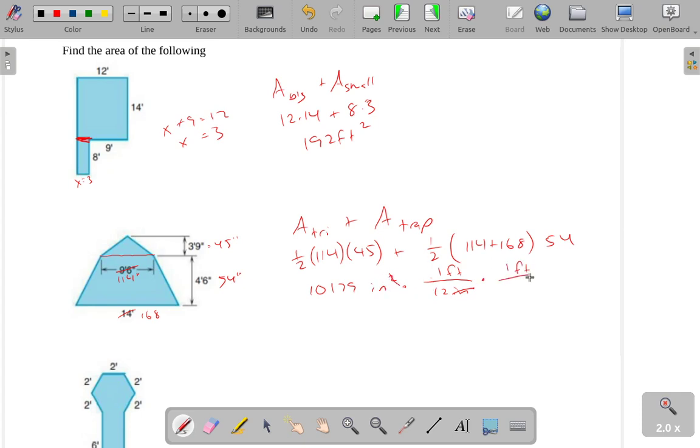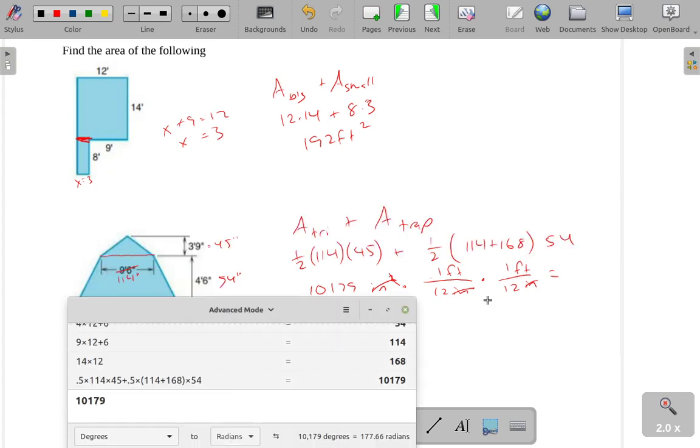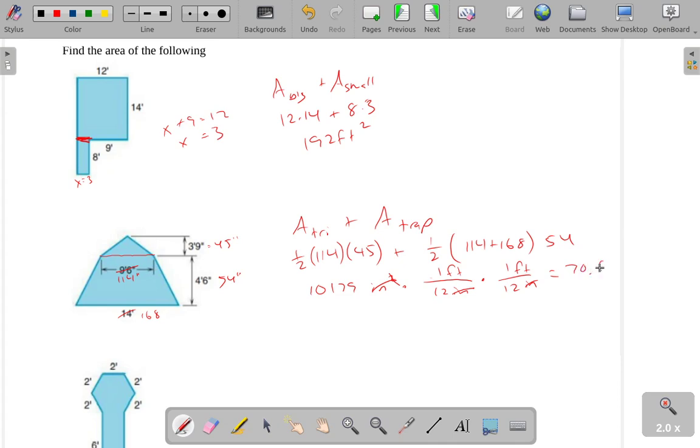I'd have to do it a second time and say 1 foot is 12 inches a second time and cancel those out, in which case I would get this number divided by 12 and divided by 12 a second time to get 70.6875 square feet.